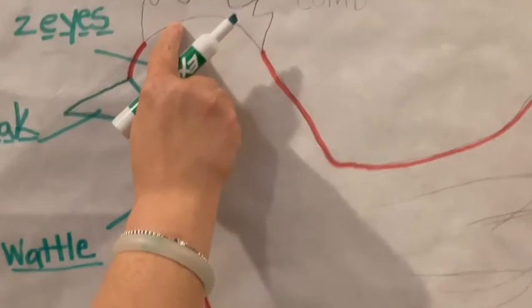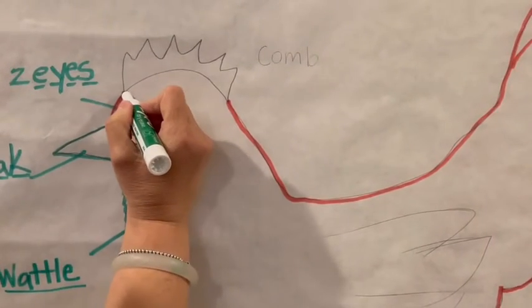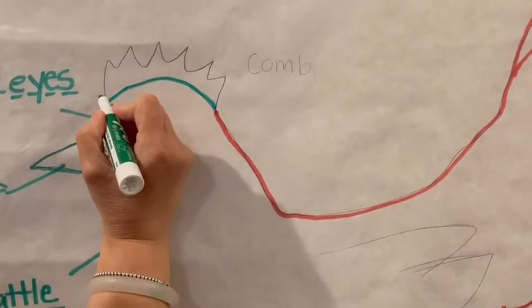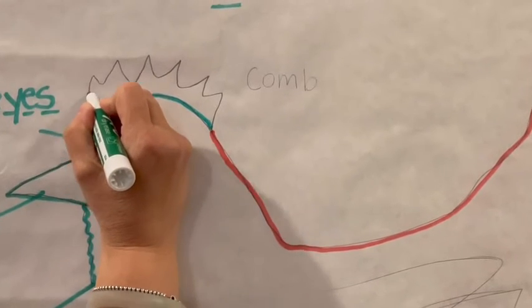And on top of the chicken's head, there's this little funny looking thing, and the name of it is a comb.